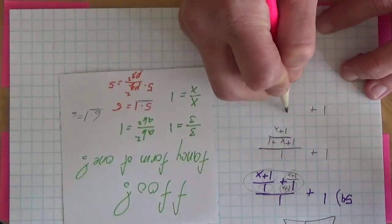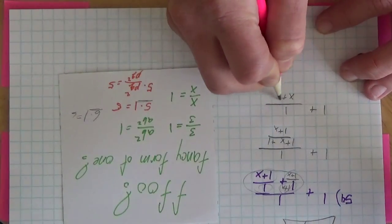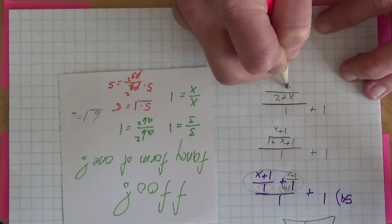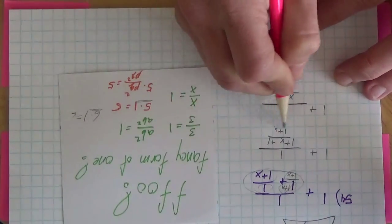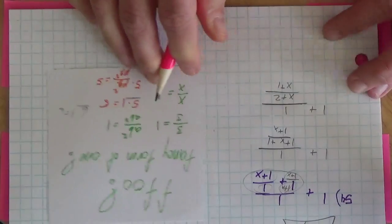And so I have 1 plus 1 over x plus 2 over... I'm just going to say 1 plus x is x plus 1. There we go.